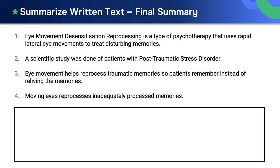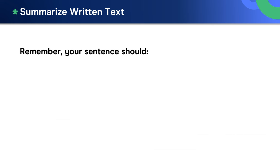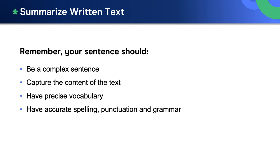Let's put our four simple sentences together and see how we can combine them into one complex sentence summary of the whole text. Here are our four sentences, each from one paragraph. And here is one way we can link them: eye movement desensitization reprocessing is a type of psychotherapy that uses rapid lateral eye movements to treat disturbing memories, especially for patients with post-traumatic stress disorder who found that it helps reprocess traumatic memories so they remember instead of reliving them. Your answer may be different and that's okay. The important things are that your summary is a complex sentence, it captures the content of the text, the vocabulary is precise, and the spelling, punctuation, and grammar are accurate.